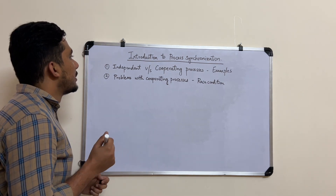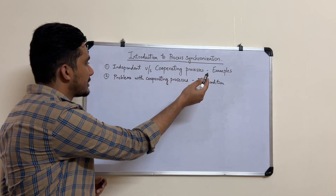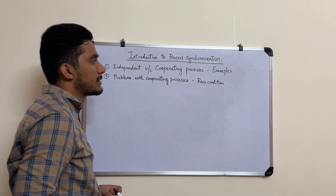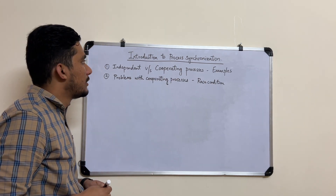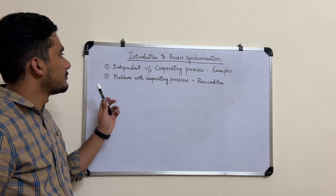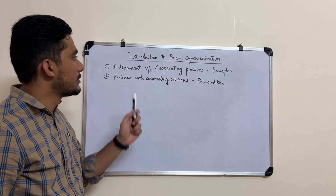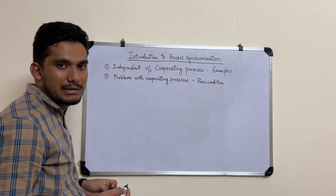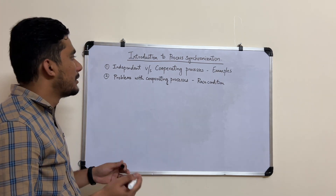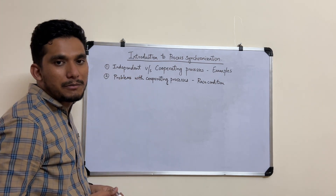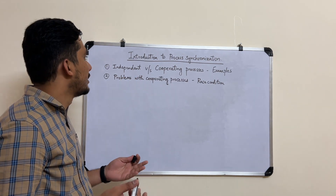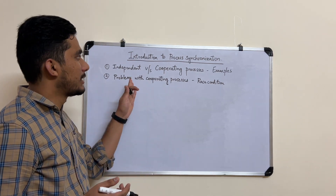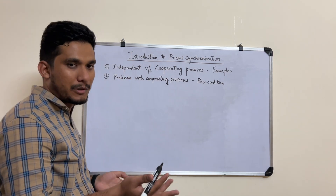In processes we basically have two types: one is the independent process and the other is called the cooperating process. To understand the difference, we can look at an example. An independent process, as the name says, does not get affected by some other process.